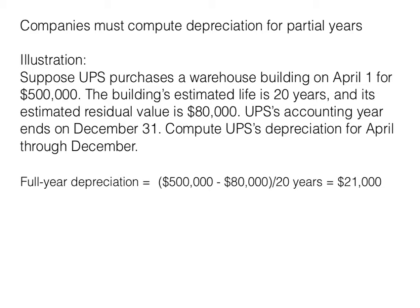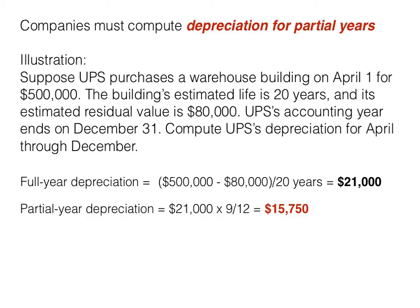If we figure out how many months we used it this year, we simply count. Since we bought it on April 1st, we count all of April, May, June, July, August, September, October, November, and December — that's nine months of use. So we take the $21,000, which is a full 12 months of depreciation, and multiply that times nine-twelfths. That gives us a partial year's depreciation for the first year of $15,750.